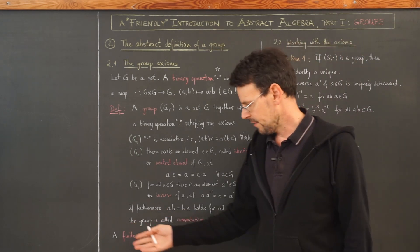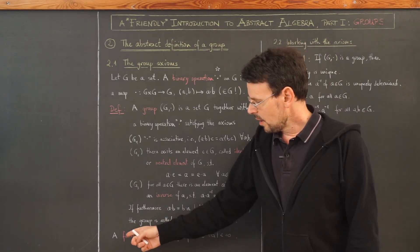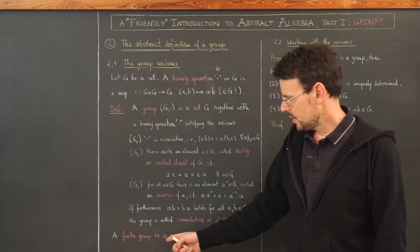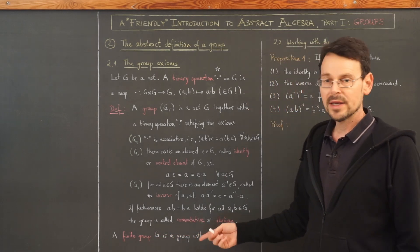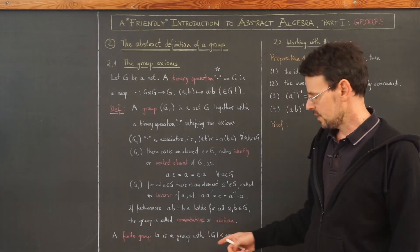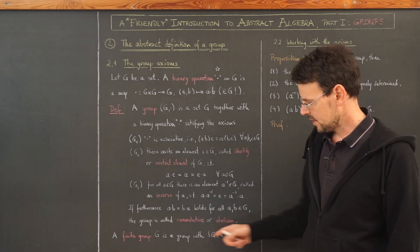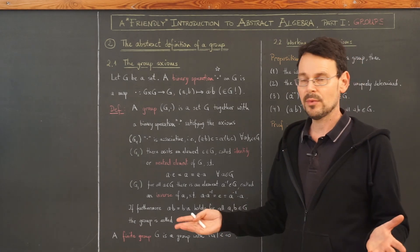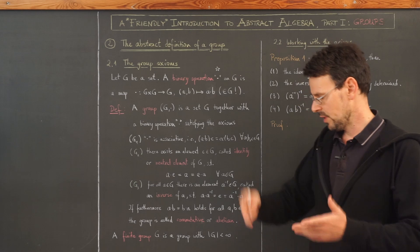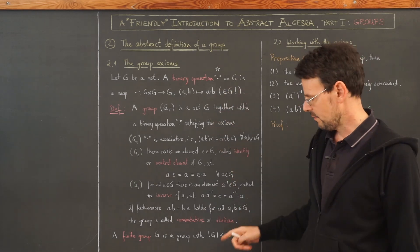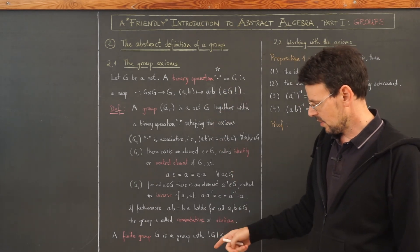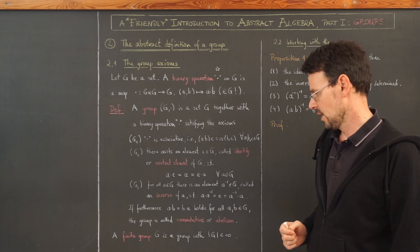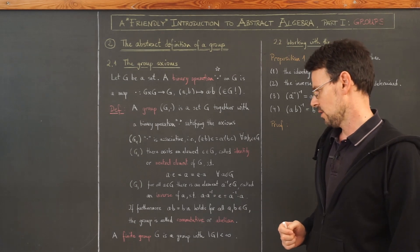A finite group is simply a group with finitely many elements, so the cardinality of the set is any natural number — it just must be a finite number of elements.